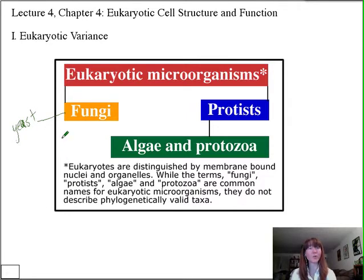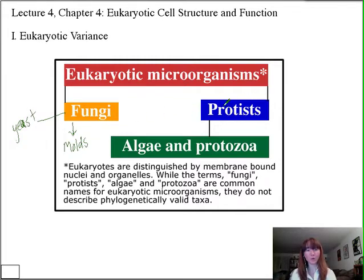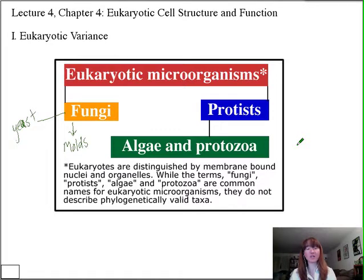Later this semester we'll have a lab lecture called The Fungus Among Us where we'll talk about both yeast and molds. Protists are another group considered eukaryotic microorganisms, and we can split them into algae and protozoa. The troubling thing is that while those are terms we still use, they're not technical terms — there is no phylogenetic grouping called algae or protozoa. In fact, many of these microorganisms have developed independently on different branches of evolutionary history, and some algae are more closely related to protozoa than to other algae. It's just a classical name for these organisms.